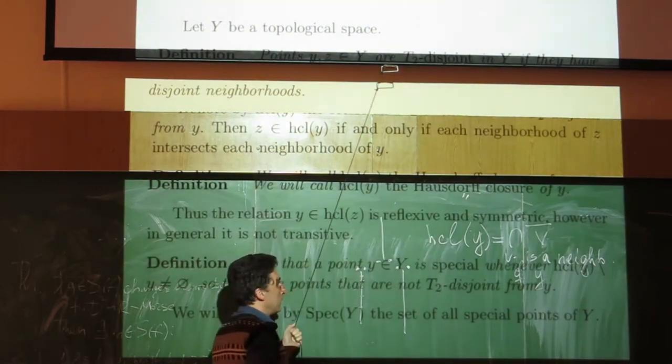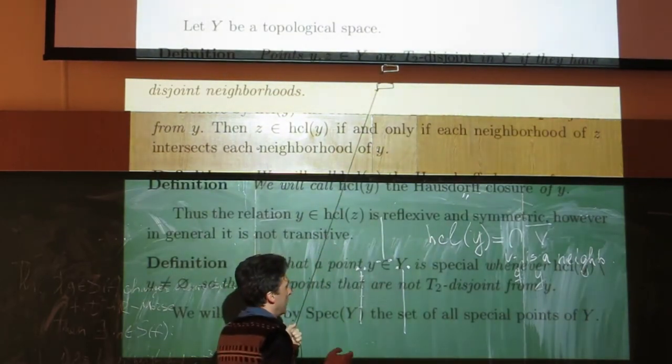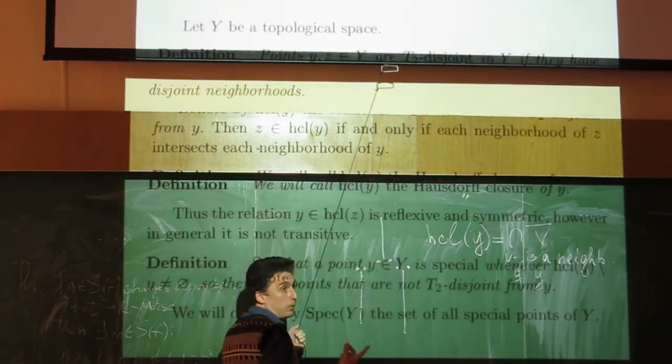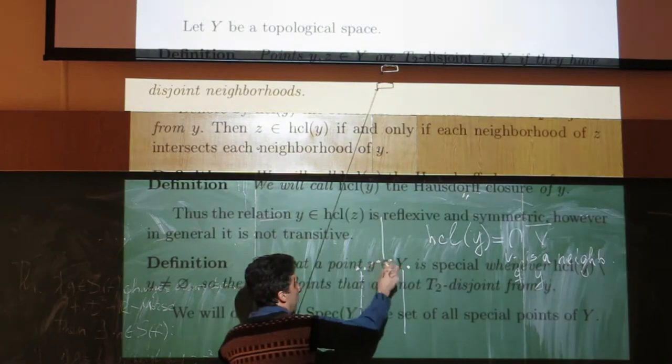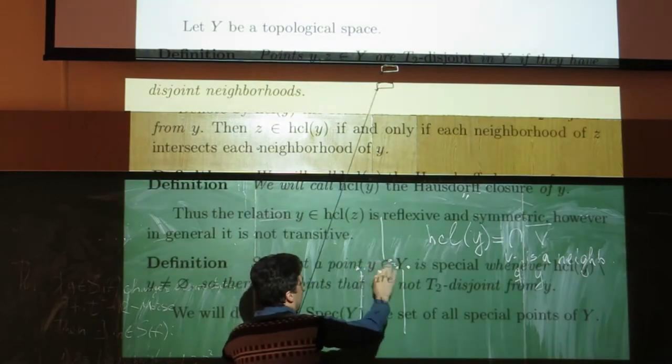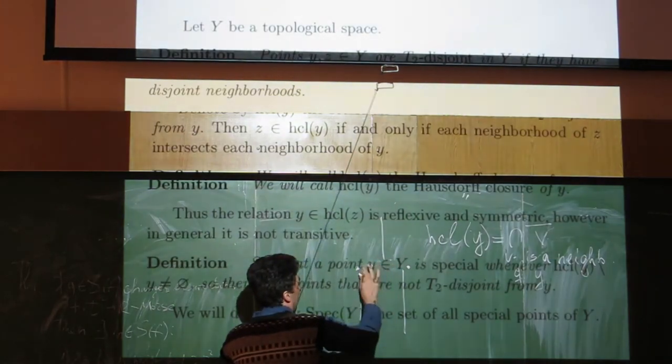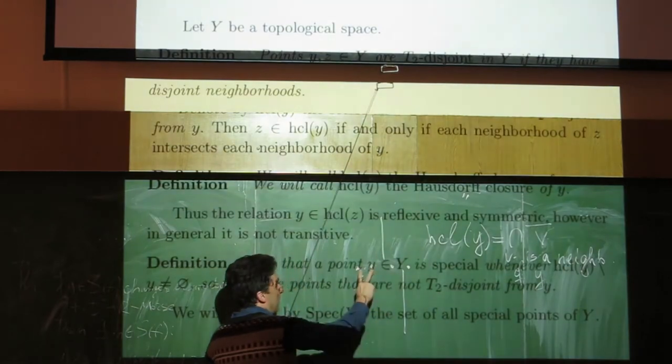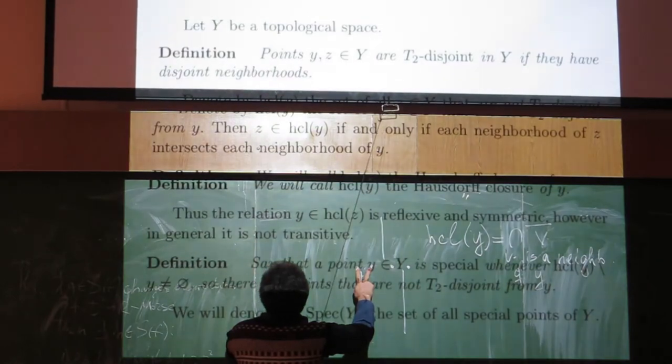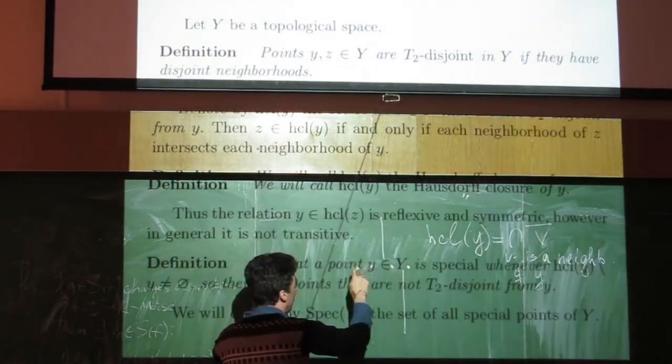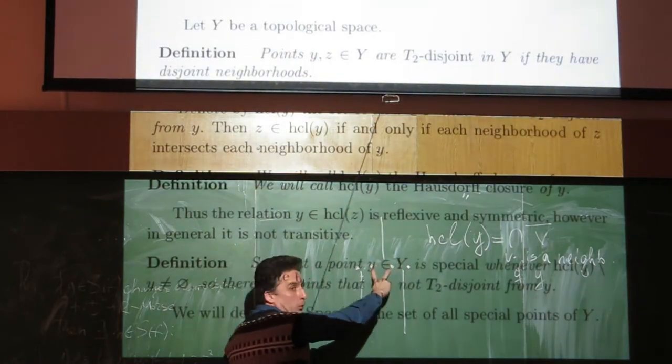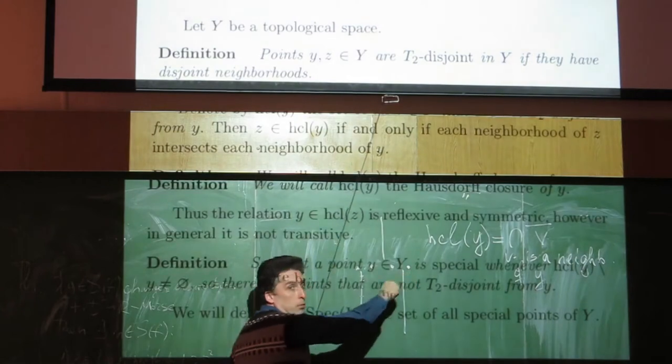And then we can reduce equivalence and say that these two points are equivalent. So, we have four points. This pair is not, would not be separated. And this pair could not be separated. And this pair could not be separated. But these points could be separated.